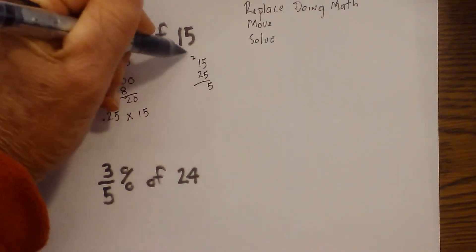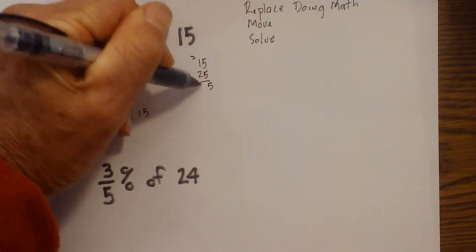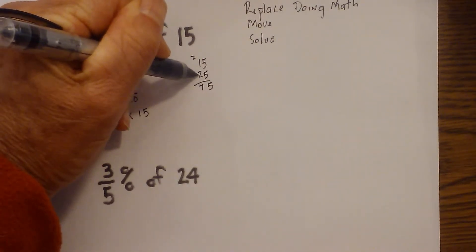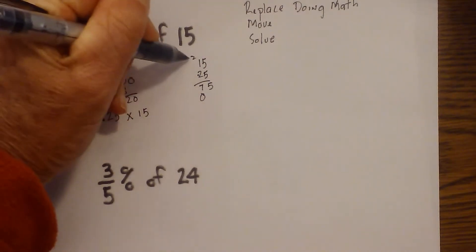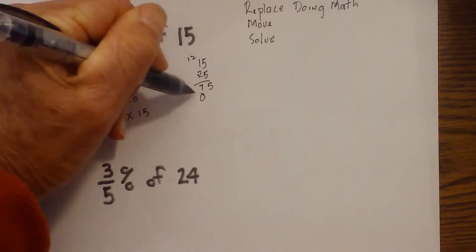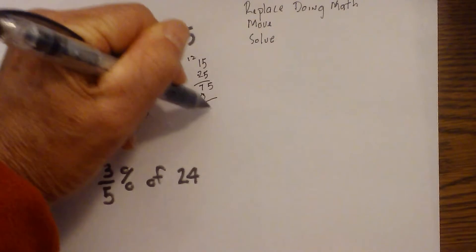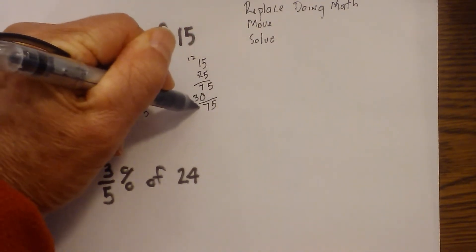5 times 1 is 5 plus 2 is 7. And then we have 2 times 5 is 10. Carry the 1. 2 times 1 is 2 plus 1 is 3. So you get 3.75.